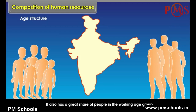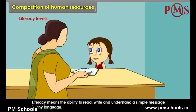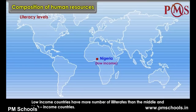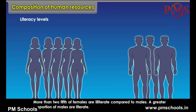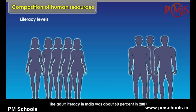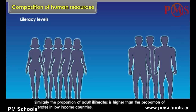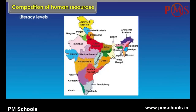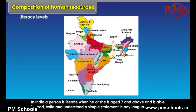Literacy Levels: Literacy means the ability to read, write and understand a simple message in any language. If a person is able to read but cannot write, he or she is considered illiterate. Low income countries have more illiterates than middle and high income countries. More than two-fifths of females are illiterate compared to males. The adult literacy in India was about 60% in 2001. In India, a person is literate when aged 7 and above and able to read, write and understand a simple statement in any language.